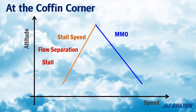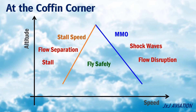If the aircraft speeds up, shock waves will start to form, resulting in flow disruption, causing the aircraft to lose altitude drastically. Only in this region, or speed range, can the aircraft fly safely.